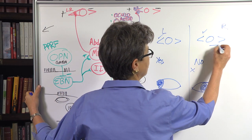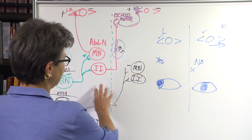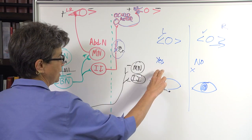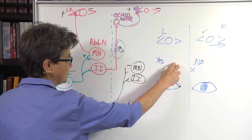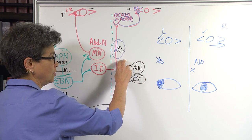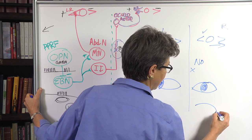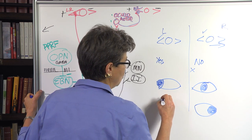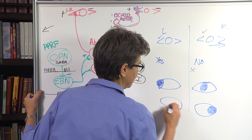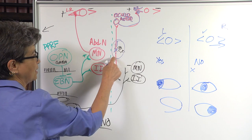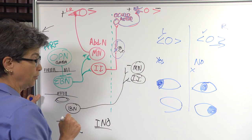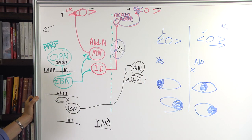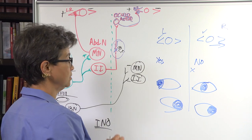What would happen if they look to the right? Everything is reversed. There's a PPRF on the right side that contacts the abducens nucleus, so the lateral rectus will work. And to get the medial rectus on the left side to contract — with a lesion on the right MLF — that's going to happen too, because the left MLF is intact. So the person will be able to look to the right normally.